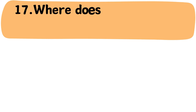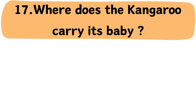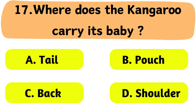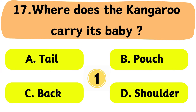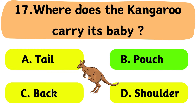Question No. 17: Where does the kangaroo carry its baby? A. Tail. B. Pouch. C. Back. D. Shoulder. The correct answer is Option B: Pouch.